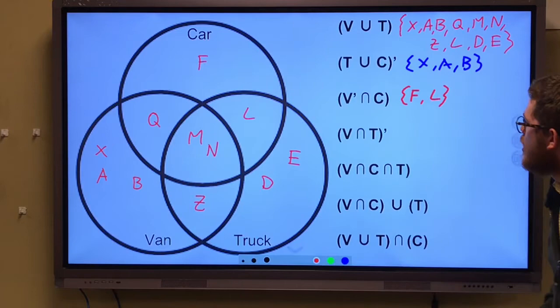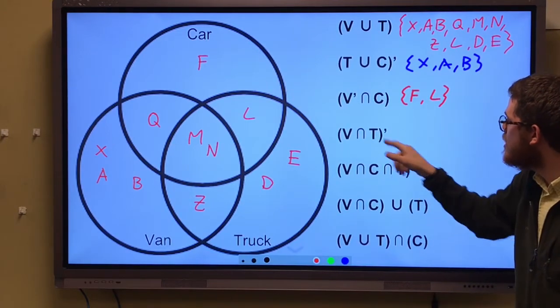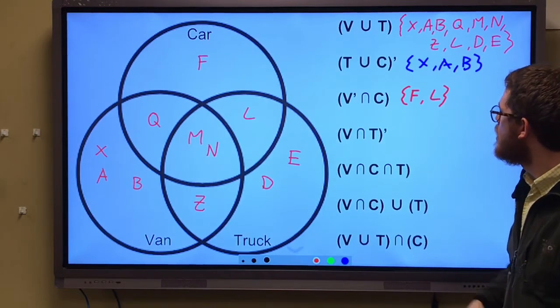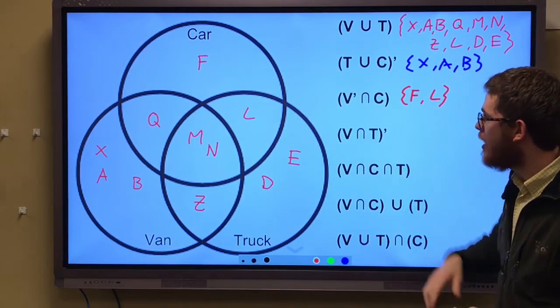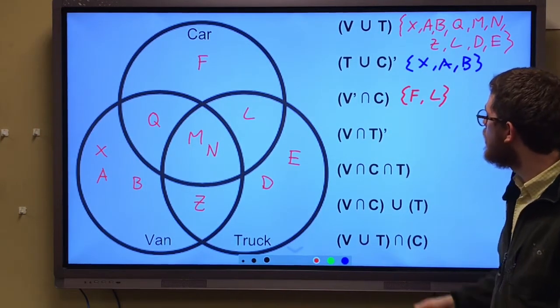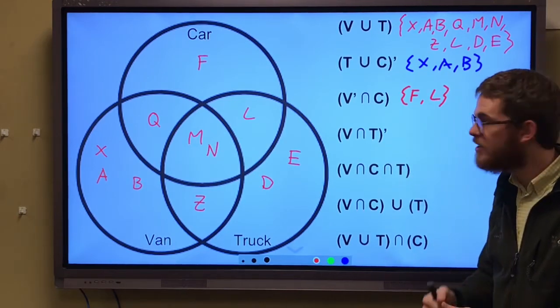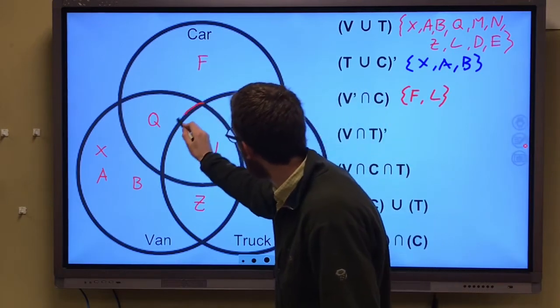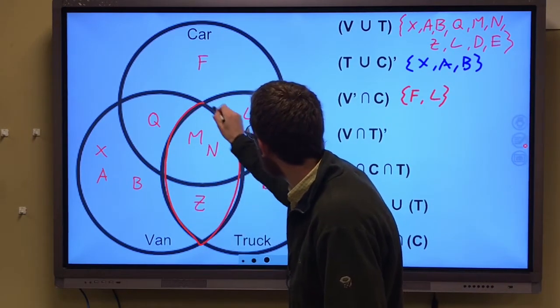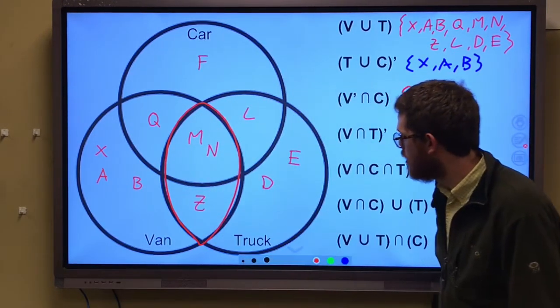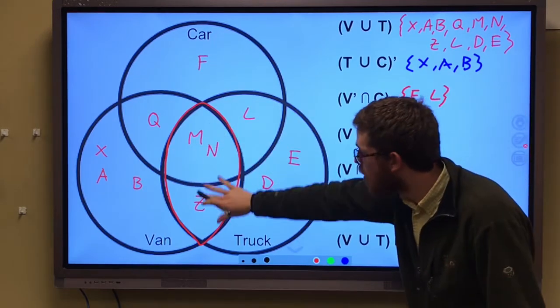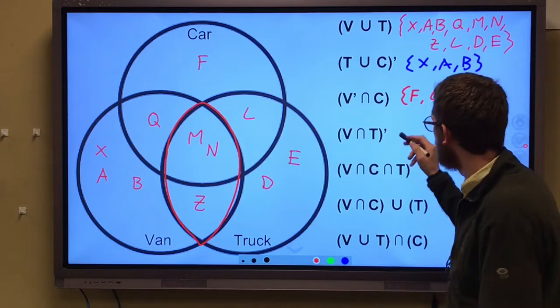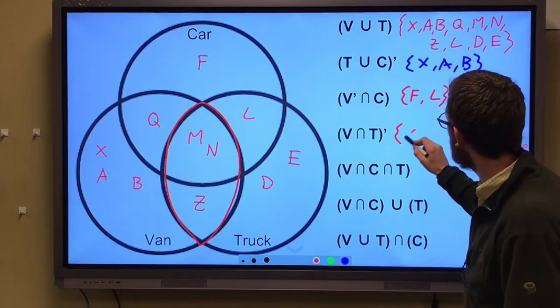We want not V intersection with T. Again, intersection, we can use that word 'and'. Not V and T. Everyone that is not V and T. So what is V and T? Where the van and the truck come together. These are the people that do have a van and the truck. We want everyone but that, we want the complement. So that would be everything else.